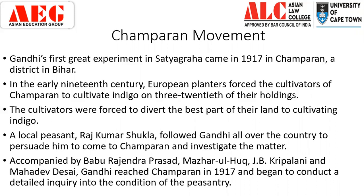One important thing to understand is that indigo has a very negative impact on the soil. It sucks out the fertility of the soil and the land has to lie fallow for a very long time to regain fertility. But every year the Tinkathia system had to be followed — every year 3 parts of your land holding had to grow indigo. So if you grew it in one section one year, the next year you had to grow it in another section because the soil fertility would have been completely depleted. The cultivators were also forced to divert the best part of their land to indigo cultivation, and were harassed and had their land seized if they could not comply.